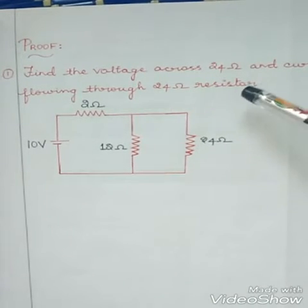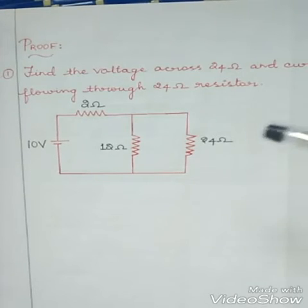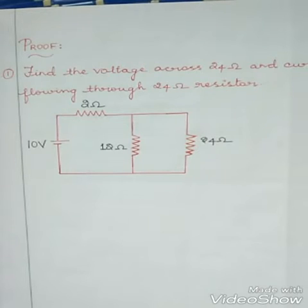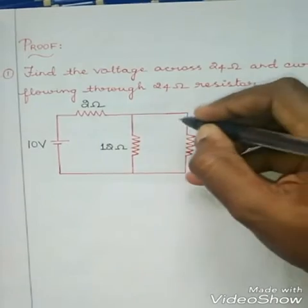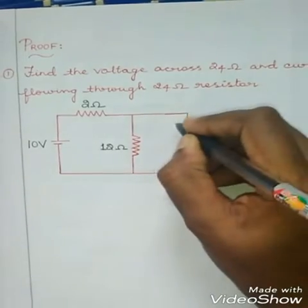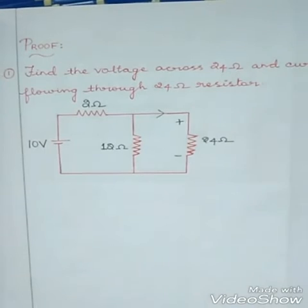This is the problem: find the voltage across the 24 ohm resistor and the current flowing through the 24 ohm resistor. First, take a look at this problem and analyze it yourself. We need to find the voltage across the 24 ohm resistor and the current through the 24 ohm resistor.